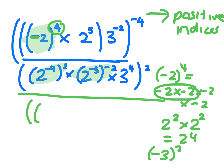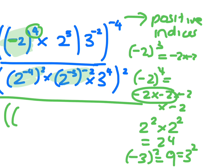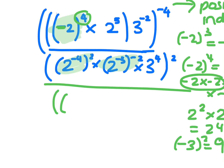Minus 3 squared will be plus 9, which is just 3 squared, because it's minus 3 times minus 3 — a minus times a minus is a plus. If it was an odd index, like minus 2 to the 3, it would be minus 8, so it wouldn't actually cancel out. It's like having minus 1 times 2 to the 3, so it won't actually cancel out.